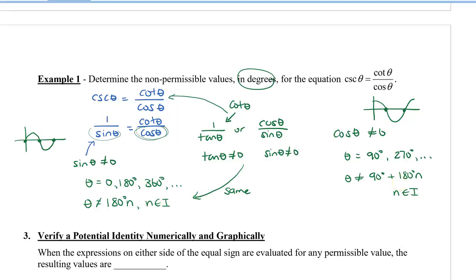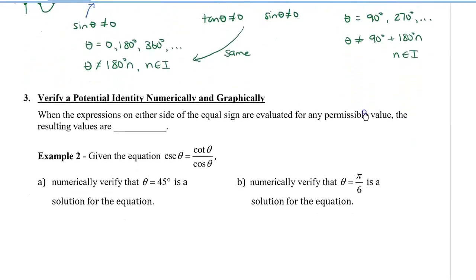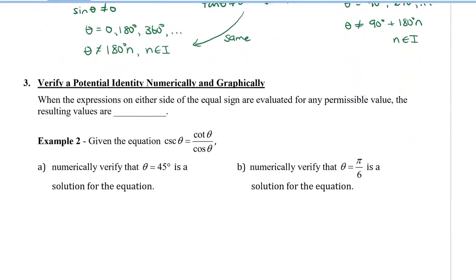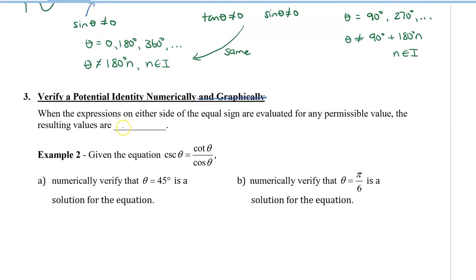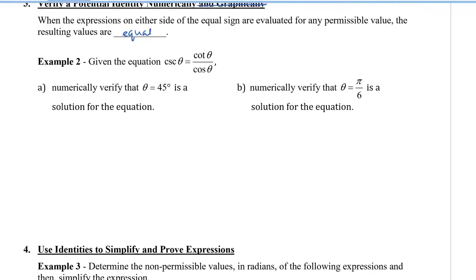The next thing is to verify a potential identity. When the expressions on either side of the equal sign are evaluated for any permissible value, the values should be equal. To verify means we're actually going to plug in an angle to check that both sides are the same. We're going to use the same equation from above.